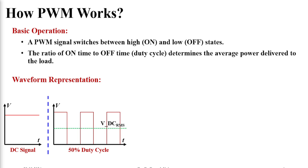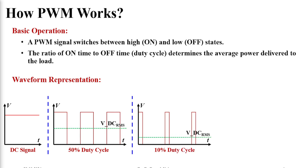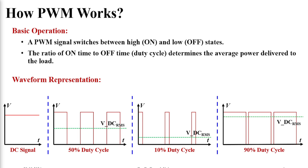By this we can modulate the DC RMS value. If we decrease the pulse width to a very low value — say 10% duty cycle — the average DC RMS value comes down and reaches very close to zero. Similarly, if we increase the pulse width, the DC RMS value moves towards the peak voltage, V positive. So by changing the duty cycle of the signal, we can control the RMS DC value, or in other words, the average power delivered to any load.